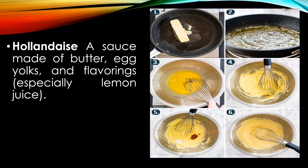To make hollandaise, clarified butter is whisked slowly and steadily into the egg yolk. Care should be taken that it is beaten over a double boiler to avoid breaking the emulsion. Mustard, salt, pepper, vinegar, or lime juice are used to season the sauce. Hollandaise sauce is termed as one of the most hazardous sauces, so care must be taken in its preparation.